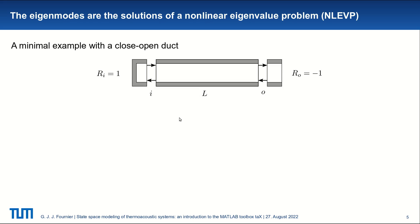Now the problem when it comes to acoustic problems is that usually we have to solve for a non-linear eigenvalue problem. Here we have a minimal example with a simple duct of length L that is closed at the inlet and open at the outlet. We neglect any mean flow, so we have R equals 1 at the inlet, R equals minus 1 at the outlet.